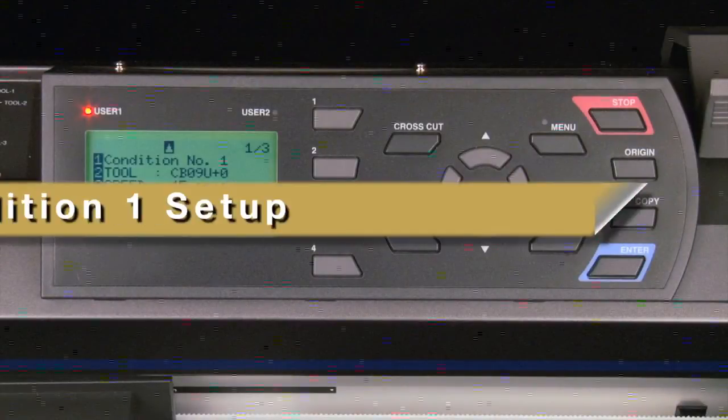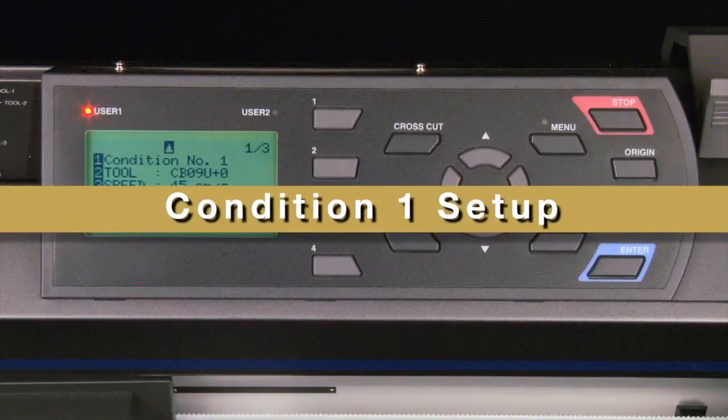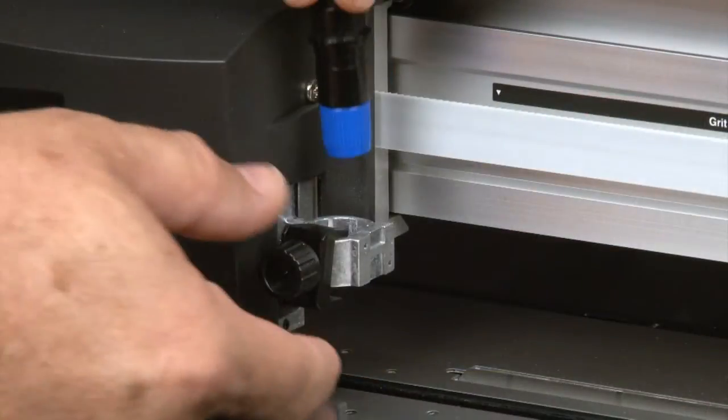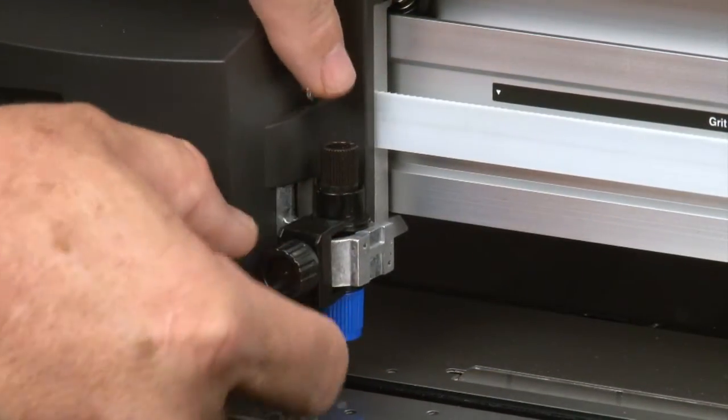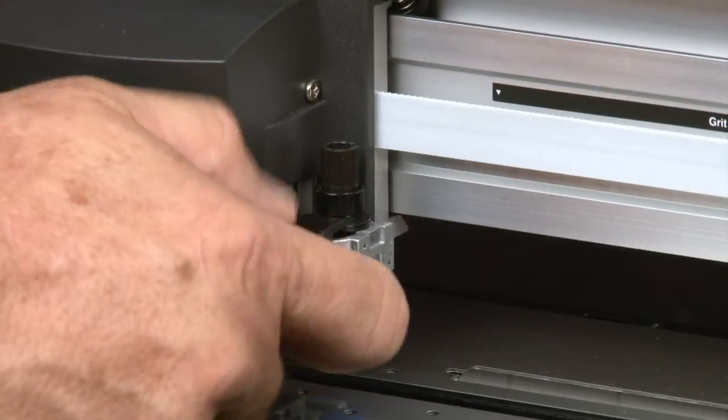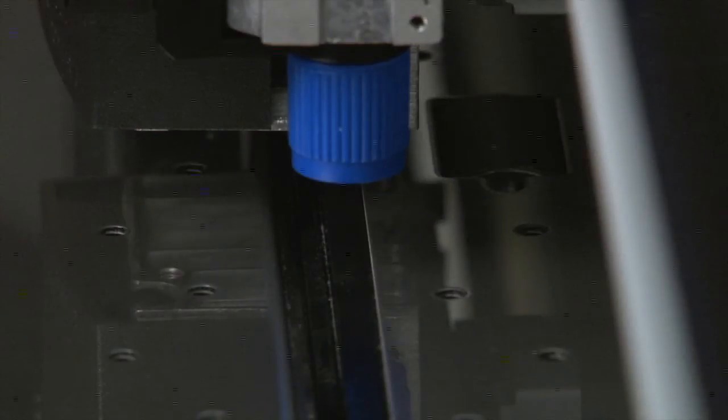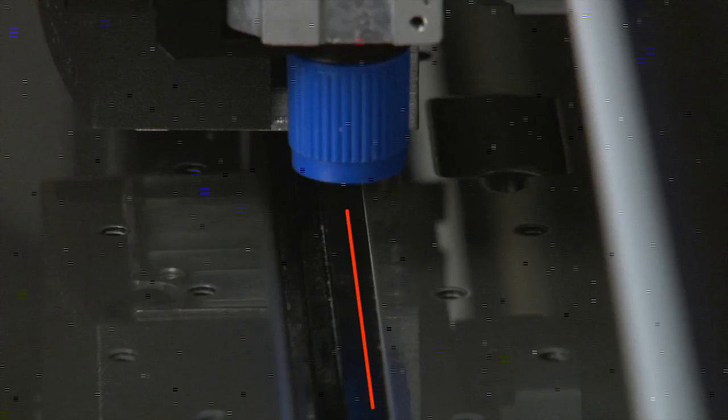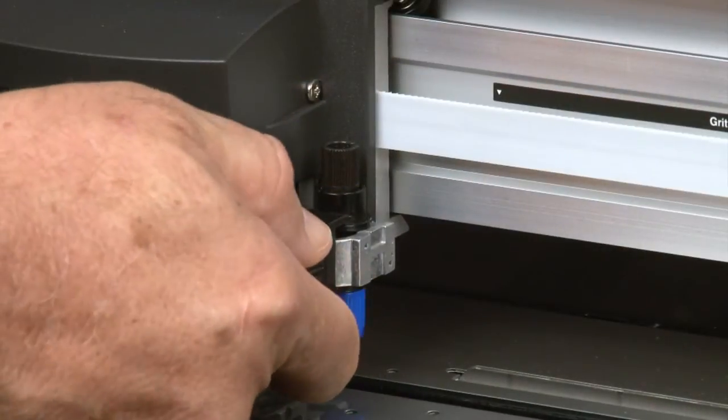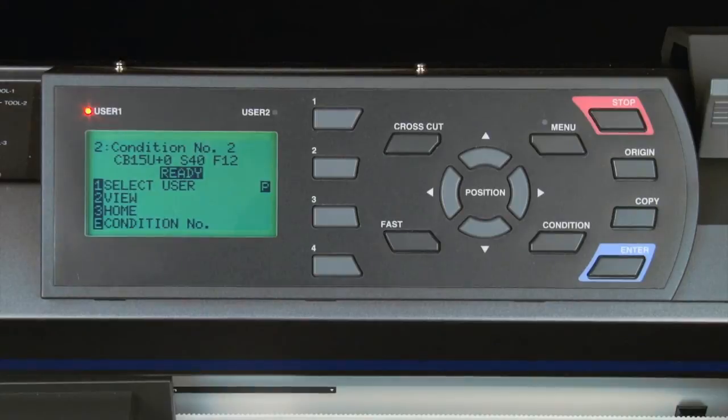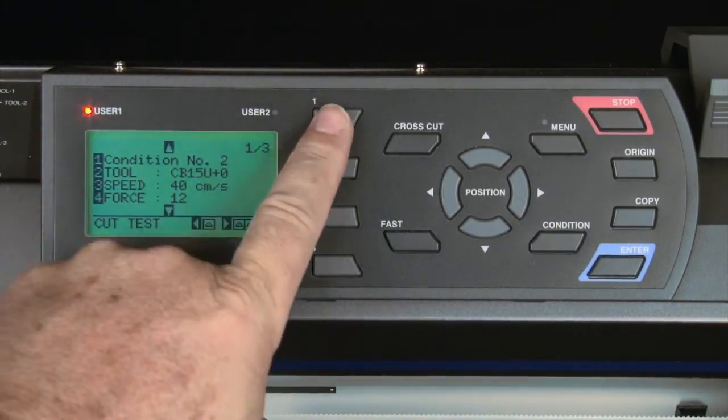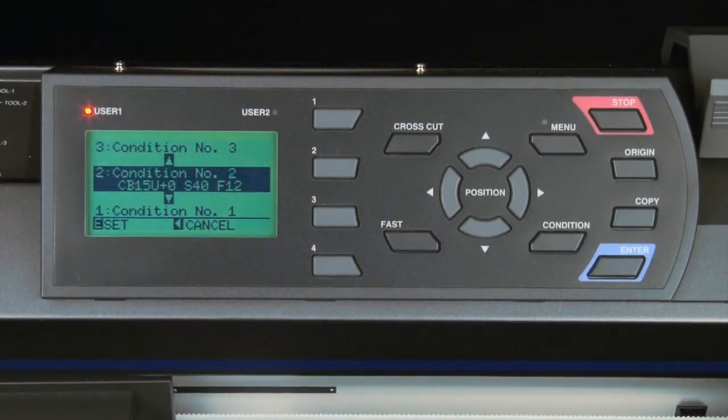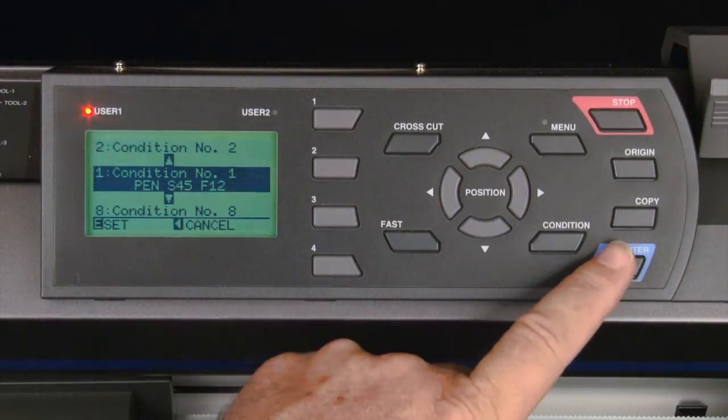To set up the kiss cut operation, start by setting up condition 1. First we have to make sure the cutting tool is in the tool carrier 1 position. Recall that this is the back slot of the tool carrier. You'll know that it's in the correct tool carrier because the tool will be positioned over the Teflon mat. Next we'll set up the two conditions by pressing the condition button, pressing the one key to change the condition number, and then pressing the arrow key to switch to condition 1 and pressing enter.